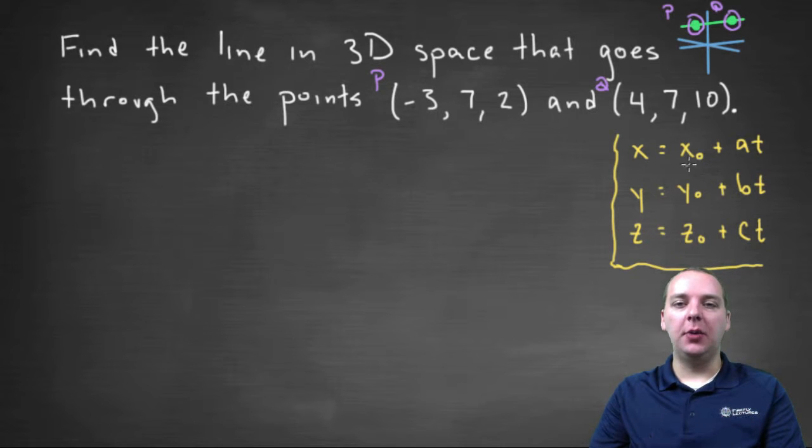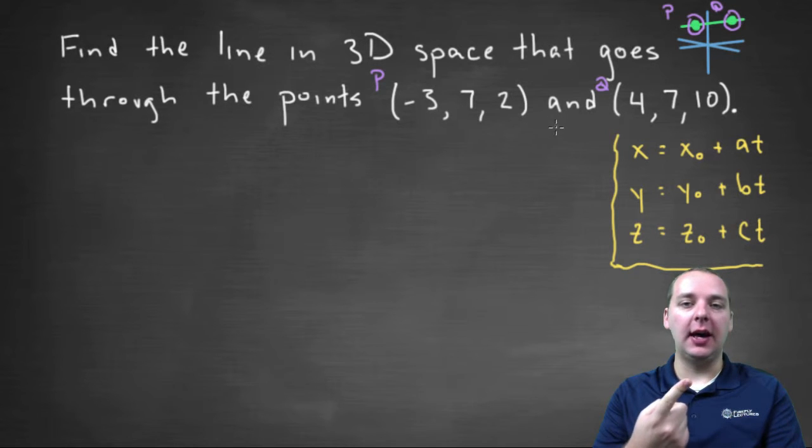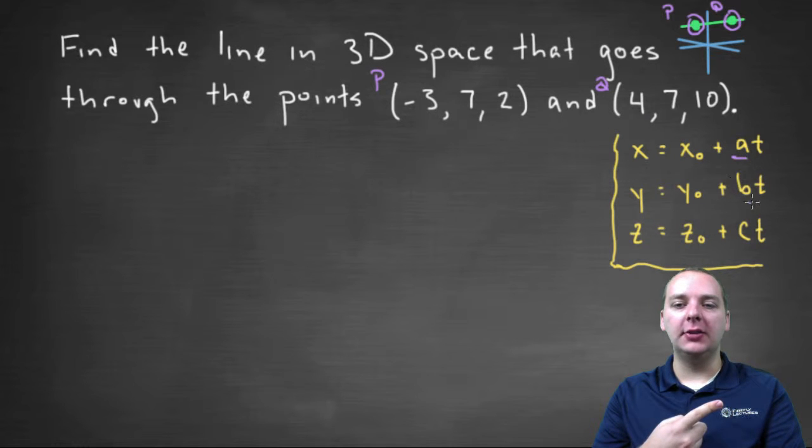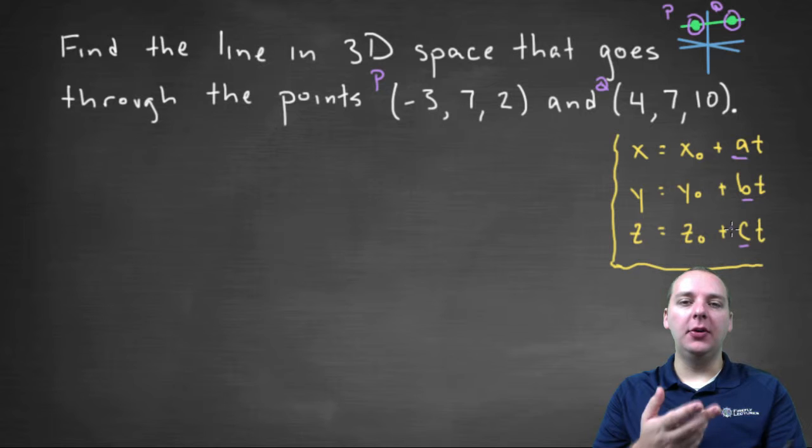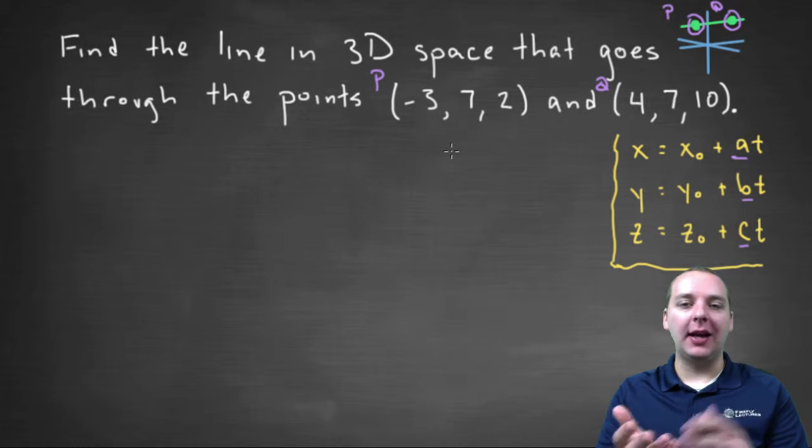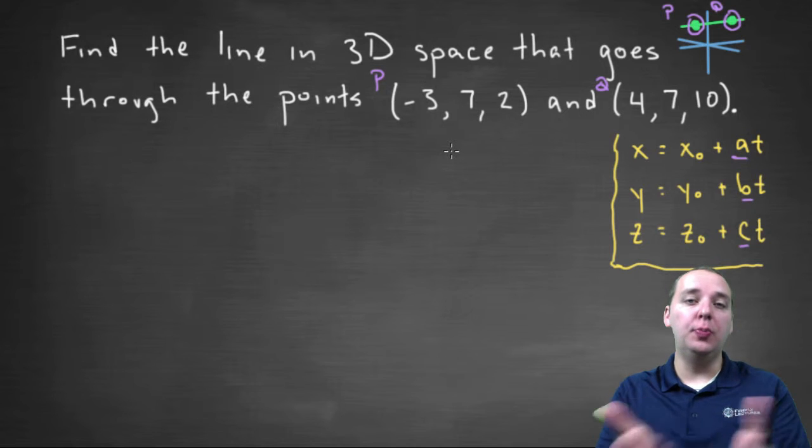And what we need for this set of parametric equations is a point that's on the line, which really either one of these would do fine for that because they're both on the line. But then we also need a direction vector for the line A, B, C. Now if you notice in the information they gave us, that was not provided. I don't see any vectors. I see two points, but I don't see any vectors.